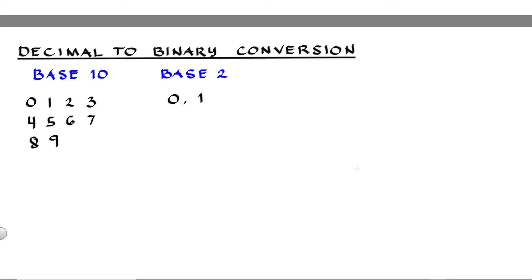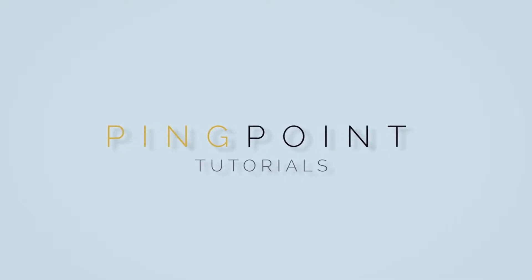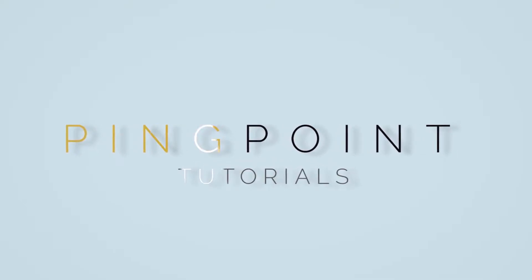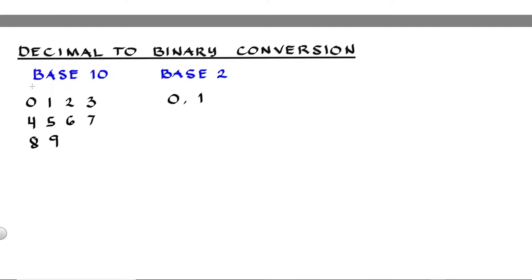Hi again, this is Pinkpoint. In this video, I will show you how to convert decimal numbers into binary numbers using two different methods. A decimal number is a base 10 number system which uses 10 digits from 0 to 9, while binary is a base 2 number system which uses two digits only, which are 0 and 1.